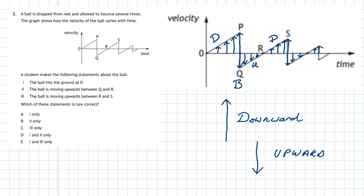Now let's check the statements. Statement 1: the ball hits the ground at P — correct, because the bounce takes place between P and Q. Statement 2: the ball is moving upwards between Q and R — correct, because the velocity vectors are pointing down the way, and by our convention that means upward motion. Statement 3: the ball is moving upwards between R and S — false, because the velocity vectors point upward, meaning the ball is actually moving downwards. So only statements 1 and 2 are correct — the answer is D.